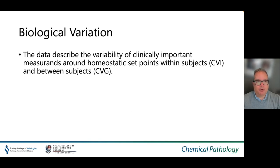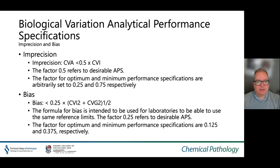Biological variation is one of the most useful ways of setting analytical performance specifications. Biological variation data describes the variability of clinically important measurands around homeostatic set points — within-subject CVI and between-subject CVG. This data can then be used to set analytical performance specifications. In the case of imprecision, the imprecision target CVA (the analytical CV) should be less than 0.5 times CVI. The 0.5 refers to the desirable analytical performance specification, while optimum and minimum performance specifications are arbitrarily set to 0.25 and 0.75 respectively.